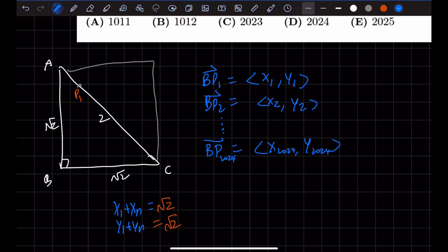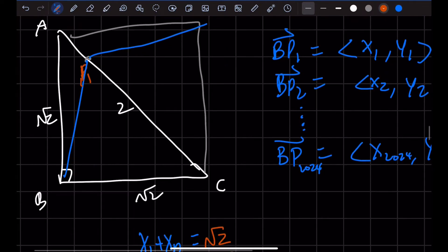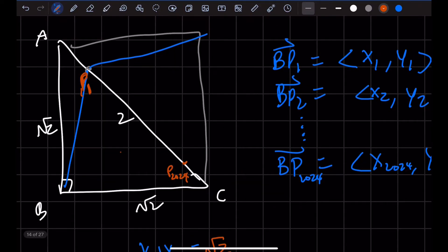It looks like symmetry, right? This is P₁, this is P₂₀₂₄. So the length of the X in P₂₀₂₄ is this right here. And the length of the Y for P₂₀₂₄, which is here, is the same as here.